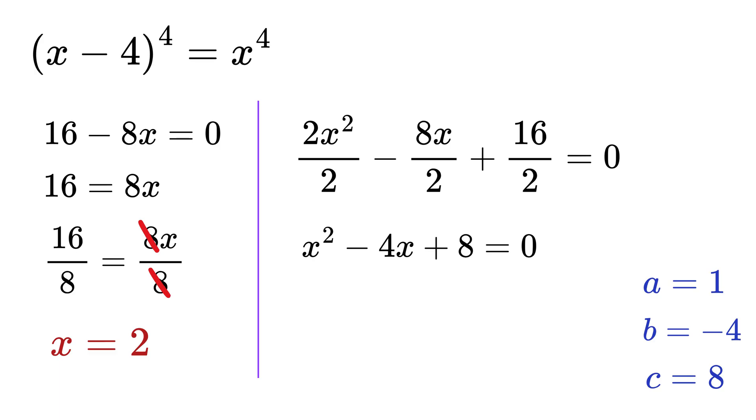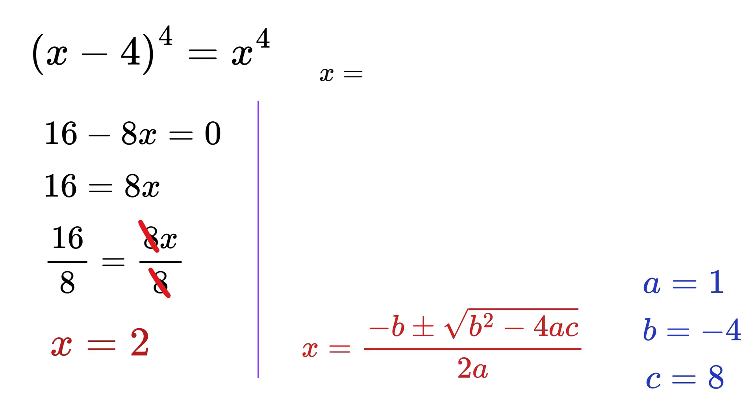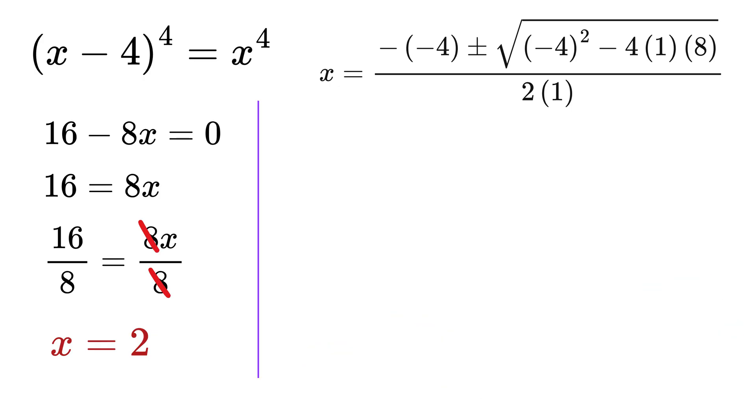The quadratic formula is x equals minus b plus minus square root of b square minus 4ac divided by 2a. So x equals negative of negative 4 plus minus negative 4 square minus 4 times a is 1 times c is 8 and this divided by 2 times a is 1. So x equals 4 plus minus 16 minus 32 and this is divided by 2. This equals 4 plus or minus negative 16 over 2.